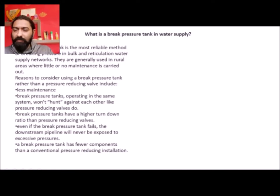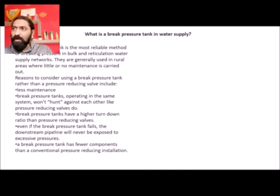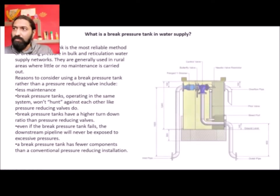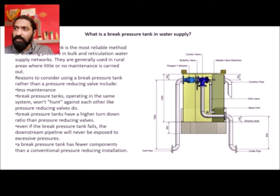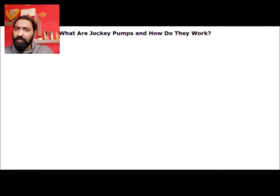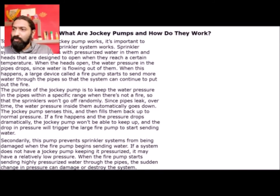Now, what is a break pressure tank in water supply? A break pressure tank is the most reliable method of breaking pressure in bulk and reticulation water supply networks. They are generally used in rural areas where little or no maintenance is carried out. A pressure tank maintains pressure, and in case of necessity the pressure can be broken so that water flow can be maintained. A break pressure tank has fewer components than a conventional pressure reducing installation.